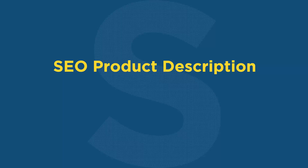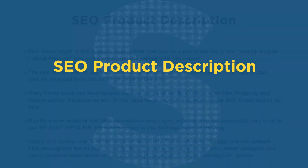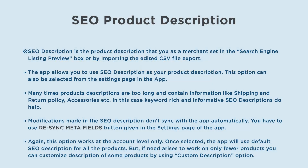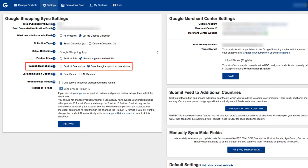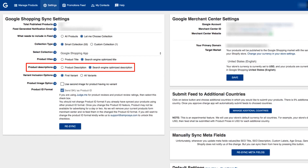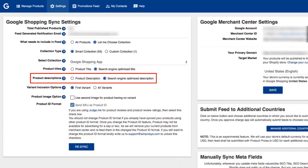SEO product description is the product description that you as a merchant set in the search engine listing preview box, or by importing the edited CSV file export. The app allows you to use SEO description as your product description. This option can also be selected from the settings page in the app.